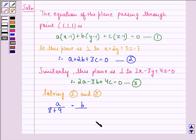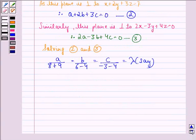So 1 into 4 is 4, and 3 into 2 is 6, so 6 minus 4 equals 2, equals c divided by minus 3 minus 4 equals minus 7. This implies a/17 = b/2 = c/(-7).